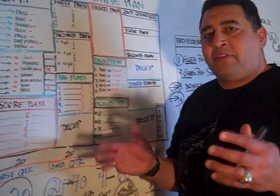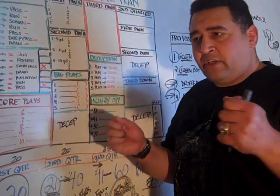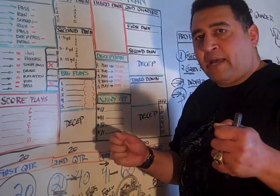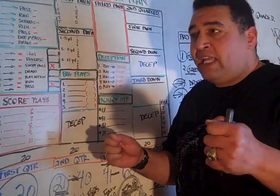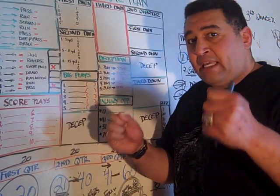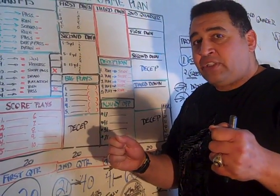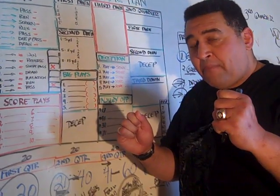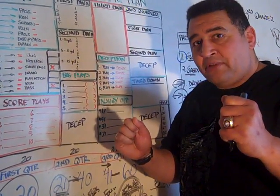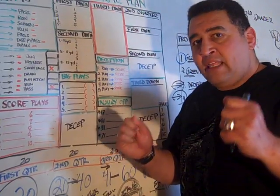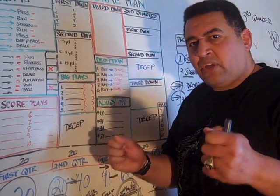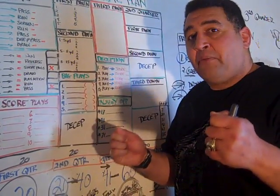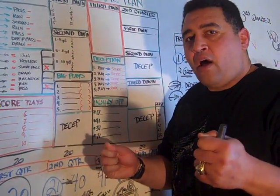It's Brian Holloway. Remember on the sideline, you see the coach have that sheet that he picks up. What they do is they're making play selections, and you also see them covering up their mouth so the lip readers can't read it. Let me show you what's on the sheet so you can understand how they're making their play calls.